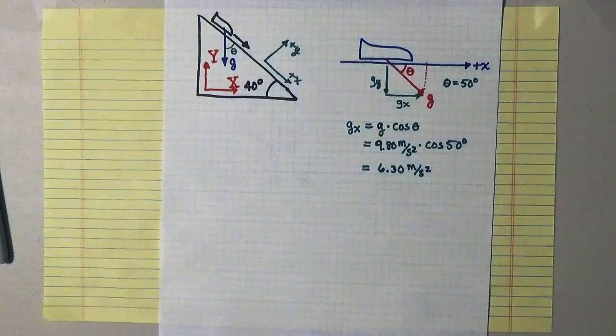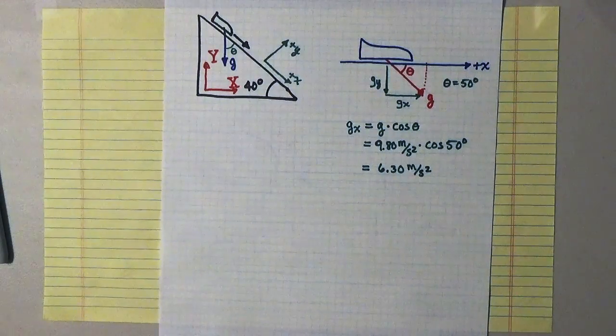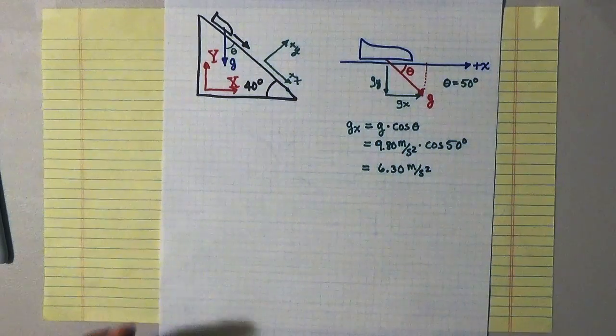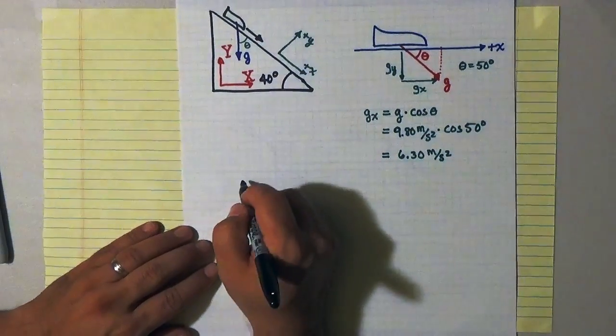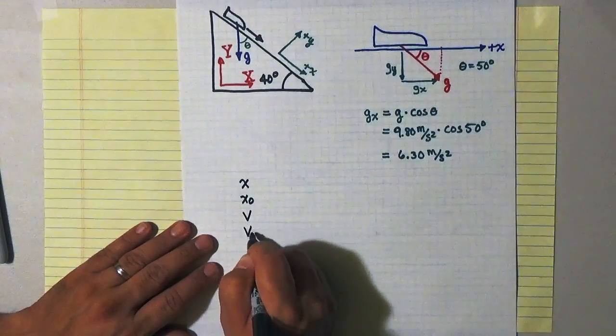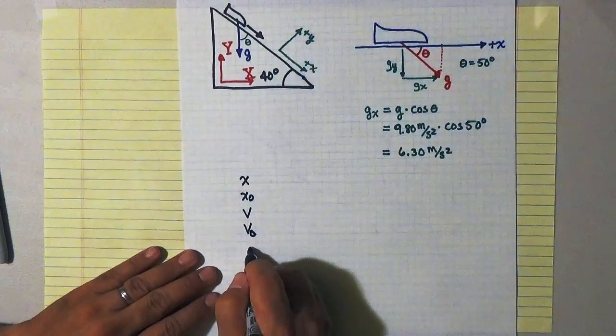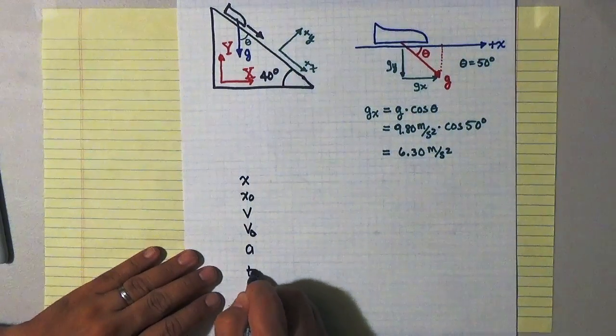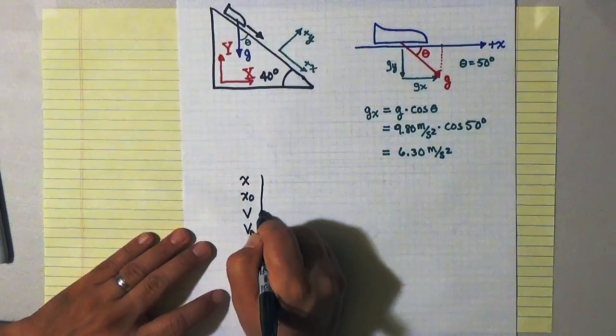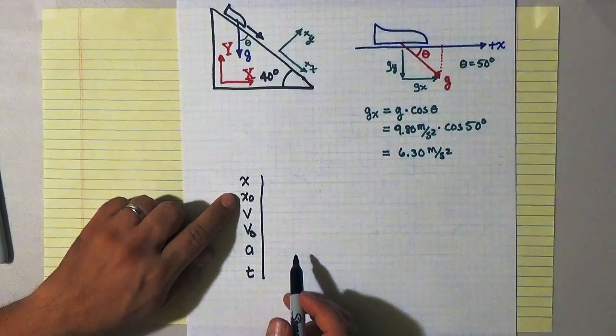So that's all the information I need. I can start setting up my kinematic table. This is now a one dimensional problem. I have all the information I need to do the x problem in kinematics. So my kinematic table is x, x_0, v, v_0, a, and t.